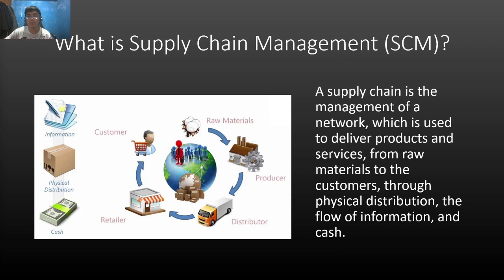So what is supply chain management, or SCM? A supply chain is the management of a network used to deliver products and services from raw materials to the customers through physical distribution and the flow of information and cash. The term supply chain refers to a connected network of individuals, organizations, resources, activities, and technologies involved in the manufacturing and sales of a product or service. Companies develop supply chains to reduce their costs and remain competitive in the business landscape. Typically, supply chain management attempts to control or link the production, shipment, and distribution of a product.